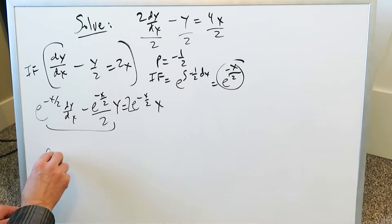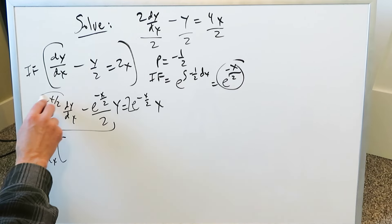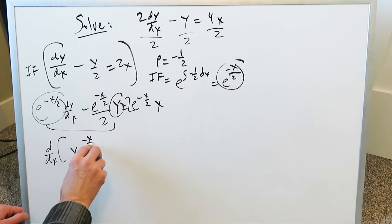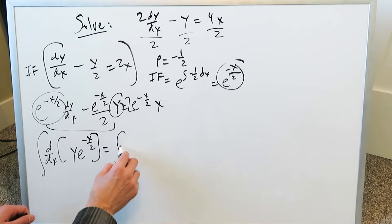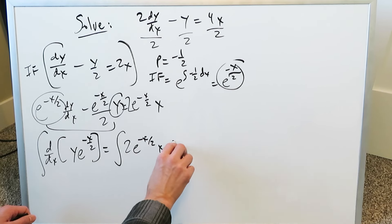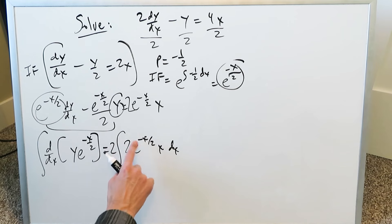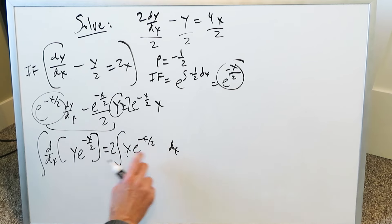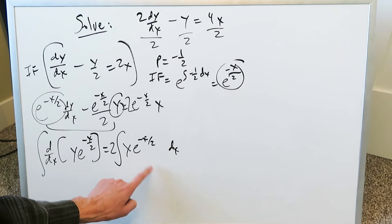When you look at the left side, it comes from the implicit differentiation of y times e to the minus x over 2 — that part is done. Now you have to find the integral of 2 e to the minus x over 2 times x dx. Bringing the 2 out, you have 2x e to the minus x over 2, and you know what technique to use: integrating by parts.